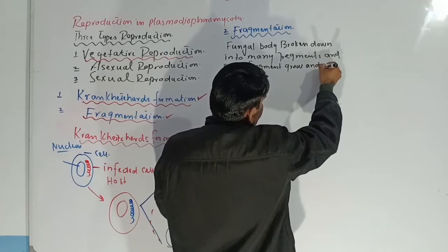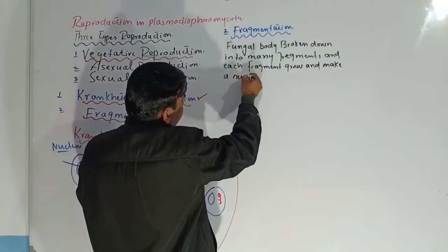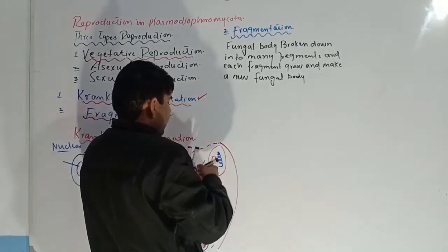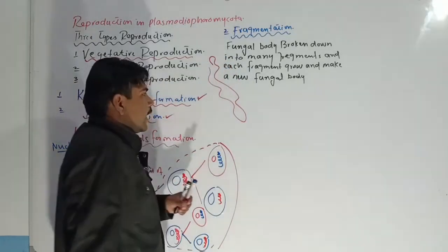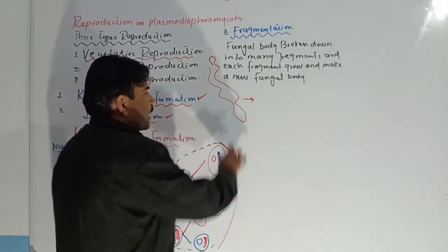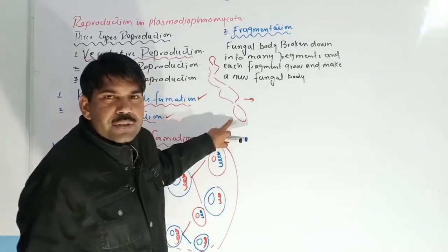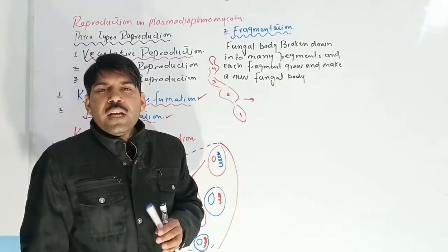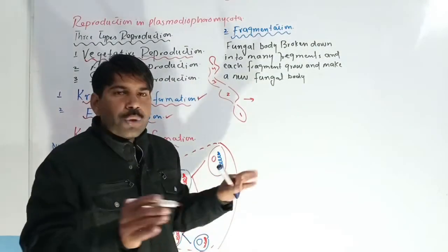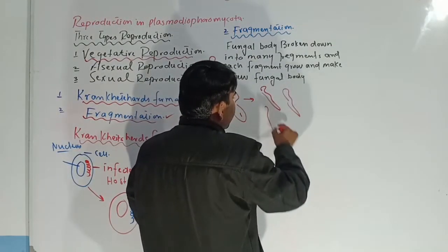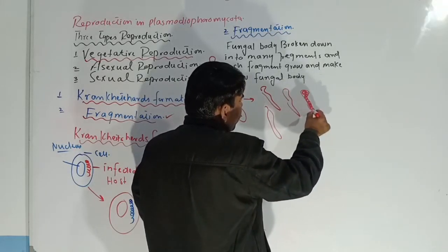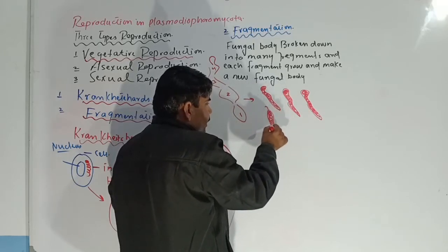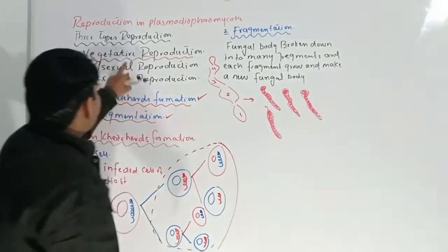Each fragment grows and produces a new fungal body. For example, this fungal body divides into many more pieces — one fragment, a second fragment, a third, and a fourth. Many more fragments may be produced from the fungal body, and each separated portion grows to produce a new fungal body. This process is known as fragmentation, discussed under vegetative reproduction.